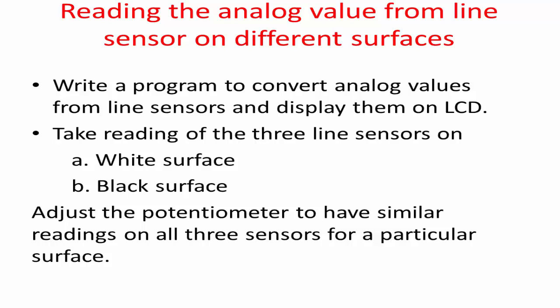To read the analog value from the line sensor on different surfaces, write a program to convert analog values from the line sensor and display them on the LCD. Take readings from the three line sensors on both white and black surfaces. Adjust the potentiometer if similar readings on all three sensors are not obtained for a particular surface.